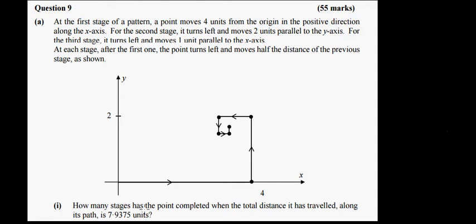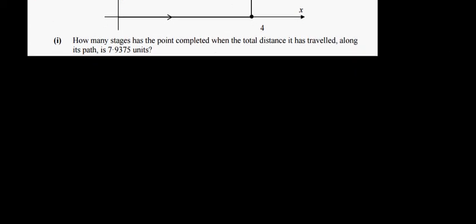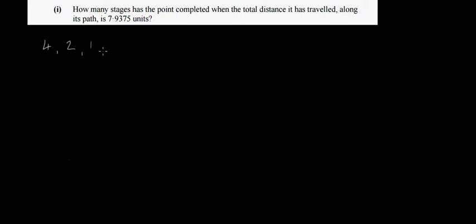How many of these individual stages has the point completed when it has traveled a total distance along its path of 7.9375 units? We can see that 4 units plus 2 units is 6, plus 1 is 7, and so on. So how many stages will it take to reach 7.9375 units? If we take our individual distances — 4, 2, 1, half, quarter — this turns out to be a geometric sequence.